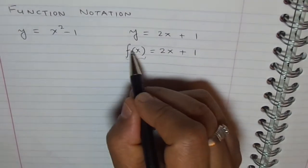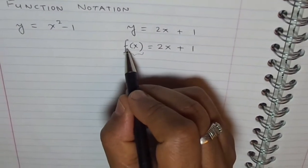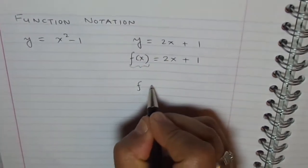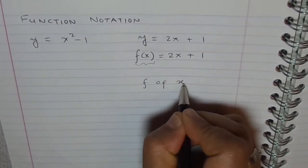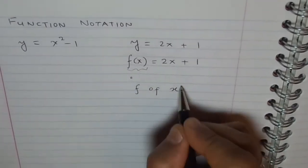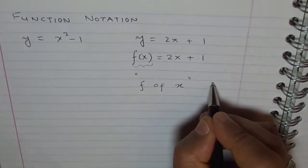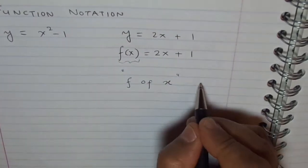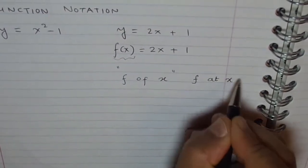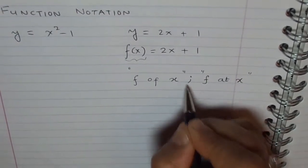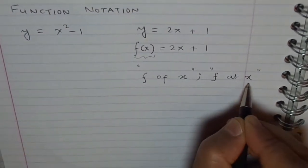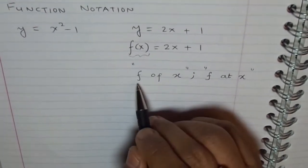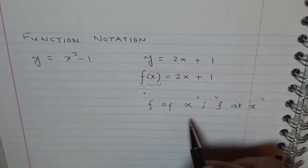Don't confuse it with any multiplication. It is not f times x. It is f of x. At times, you can also see it as value of function at x. So it is not multiplication. It is just f of x. And that is how the symbol is.